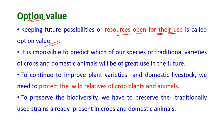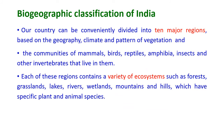Option Value: Keeping future possibilities or resources open for future use is called option value. It is impossible to predict which species or traditional varieties of crops and domestic animals will be of great use in the future, so we have to preserve all of them. To continue to improve plant varieties and domestic livestock, we need to protect the wild relatives of crop plants and animals. We also have to preserve the traditionally used strains already present in crops and domestic animals.